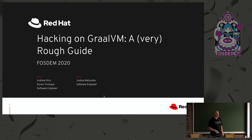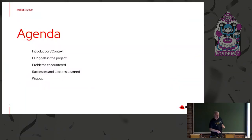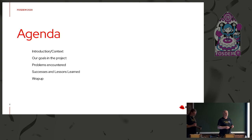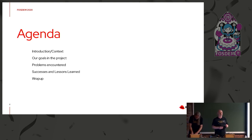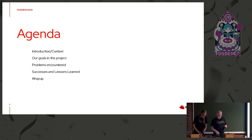This is a talk about our attempts to add some new functionality to GraalVM. I'll start by providing some background about what Graal is, just to give an overview of how it works and what we're actually trying to achieve, talk about the things we wanted to do, explain how that went, some of the problems that we had, what we actually succeeded in doing, and some of the things we learned from the process.